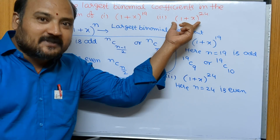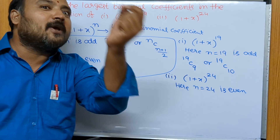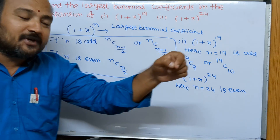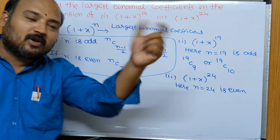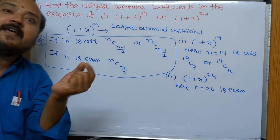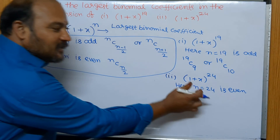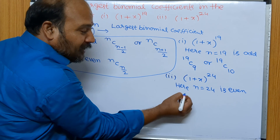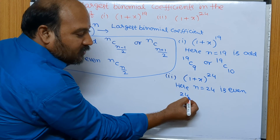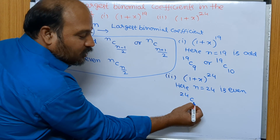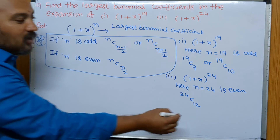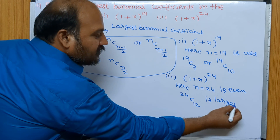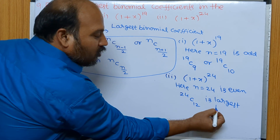For the expansion (1+x)^24, find the largest binomial coefficient. Since n is even, the largest binomial coefficient is nC(n/2). Here n = 24, therefore the largest binomial coefficient is 24C(24/2) = 24C12.